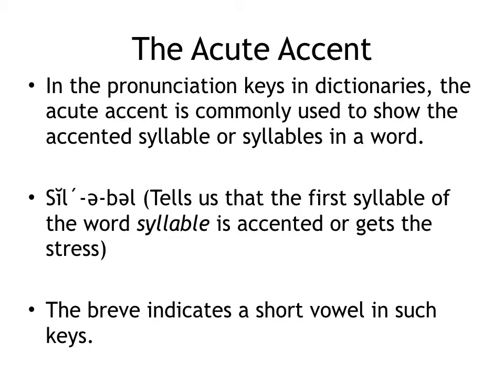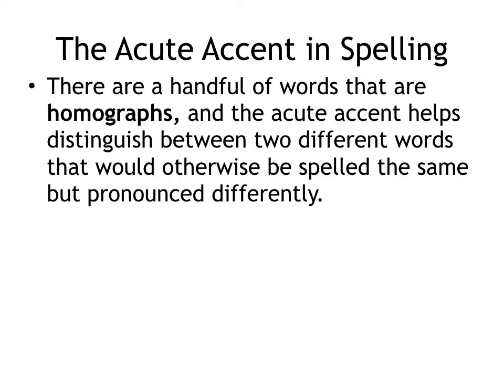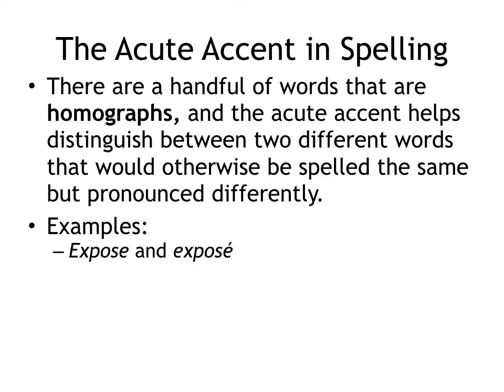Not all pronunciation keys do it that way, but this is pretty common in dictionaries. In English, there are a handful of words that are homographs — words that are spelled the same but pronounced differently — and the acute accent helps distinguish between two different words that otherwise would be spelled the same. This is becoming more common, and for certain words it is helpful. For example, exposé and expose — two different words, related but different meanings. One is the verb and one is the noun. The exposé has the acute accent on the E because that shows us it's pronounced like a long A.